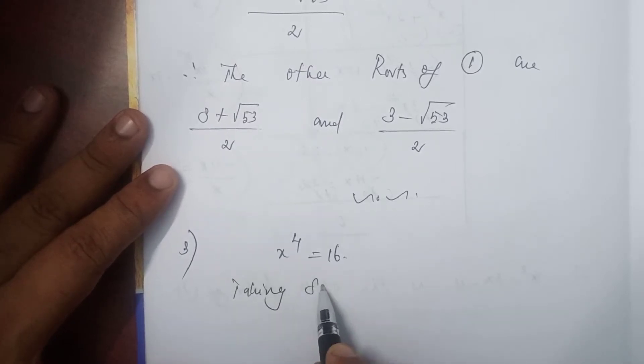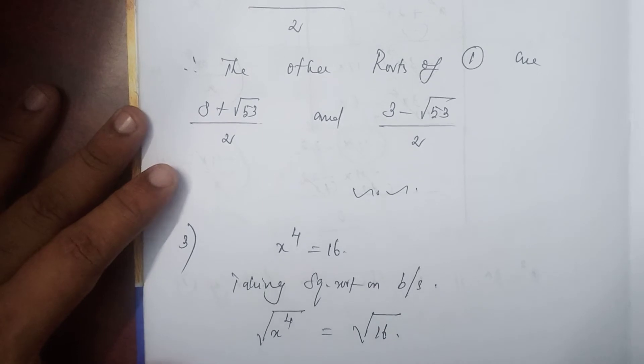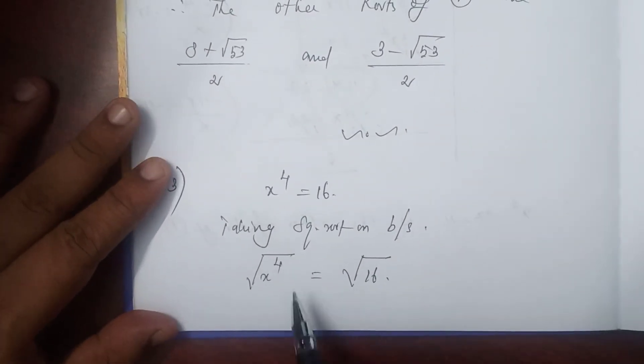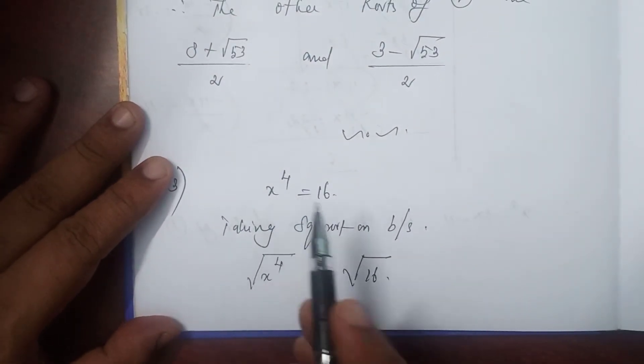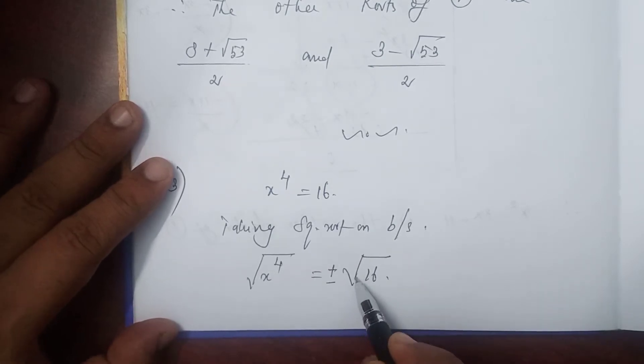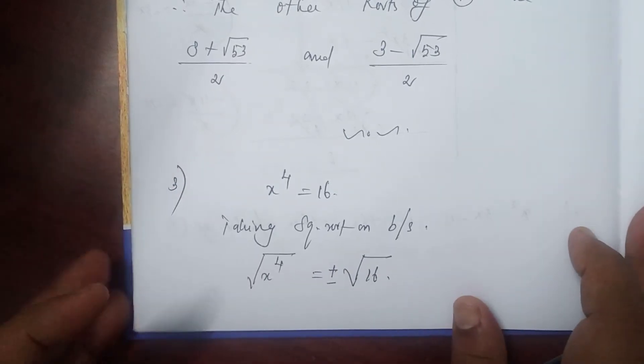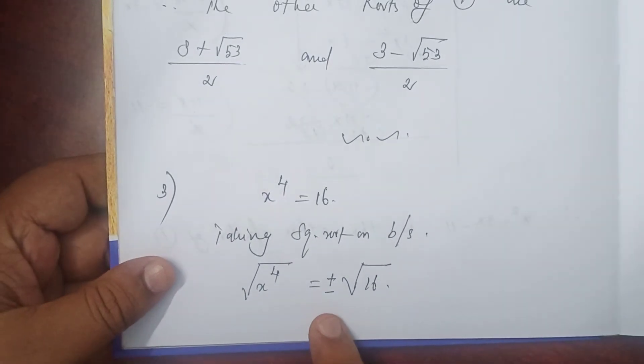Taking square root on both sides: √(x⁴) = √16. Since we have an even number in the power, you have to introduce plus or minus. The square root of x⁴ is x², half of the power. So x² = ±√16 = ±4.